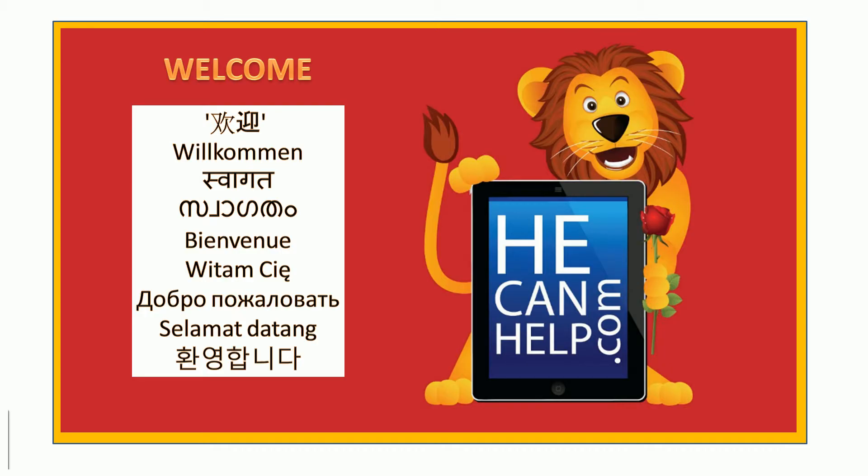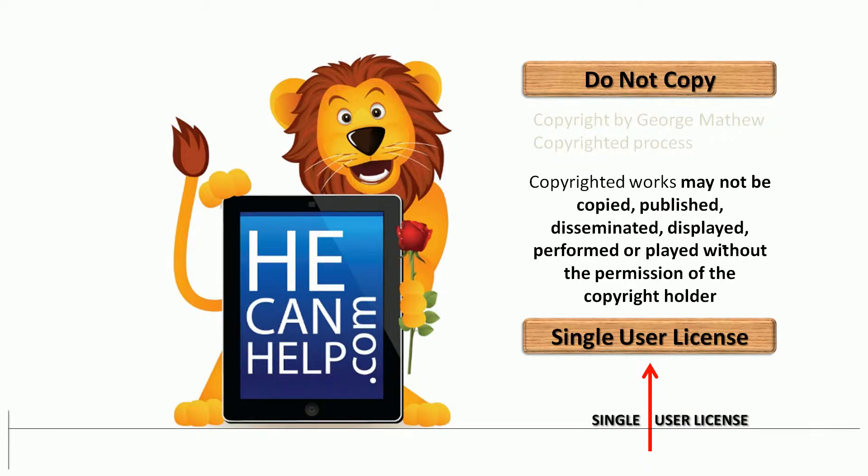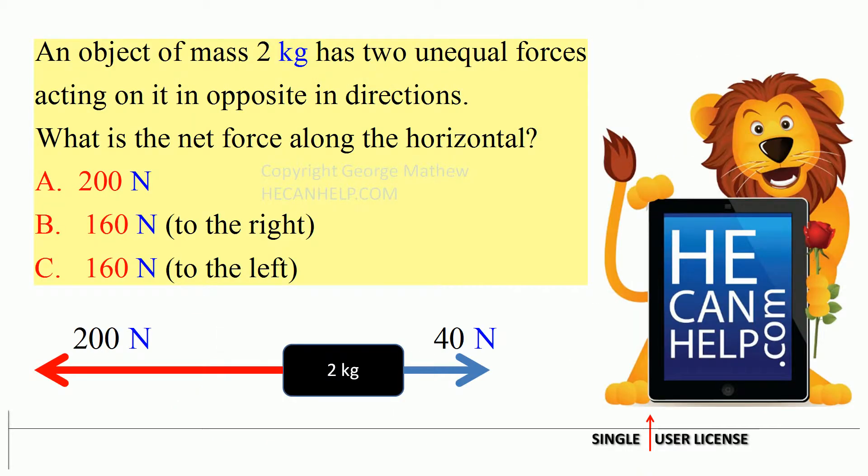Net force. An object of mass 2 kg has two unequal forces acting on it in opposite directions. What is the net force along the horizontal?